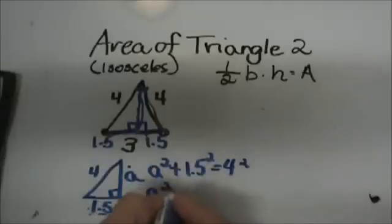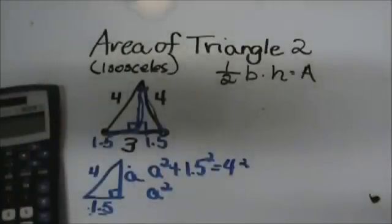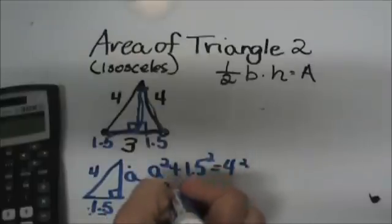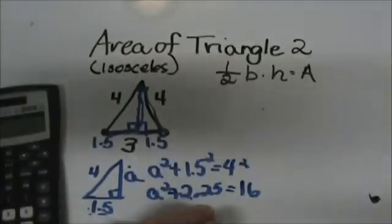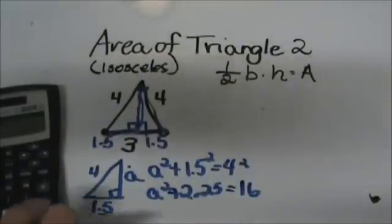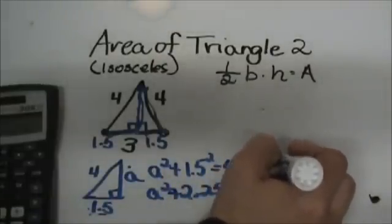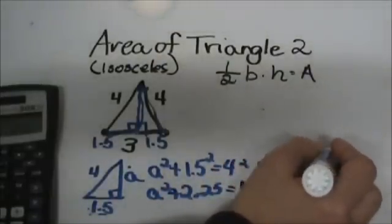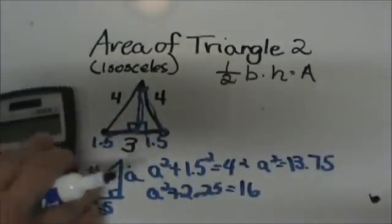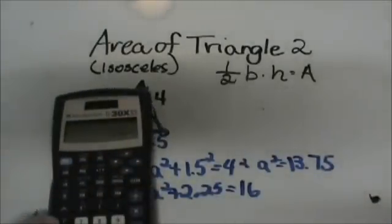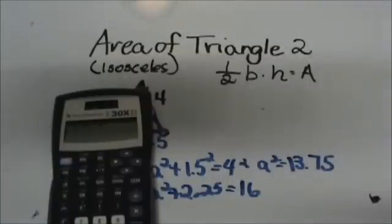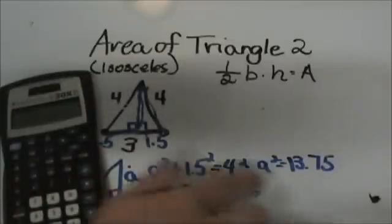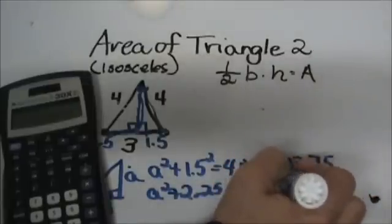So A squared just comes down. 1.5 squared — grab your handy dandy calculator — 1.5 hit your squared button and that is 2.25, and 4 squared equals 16. So I am going to take 16 and subtract 2.25, and that gives me A squared equals 13.75. Now in your calculator you can use the second function button and x squared to get the square root, and the square root of 13.75 is 3.7.